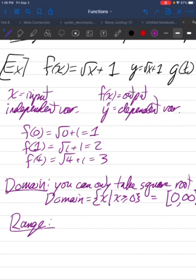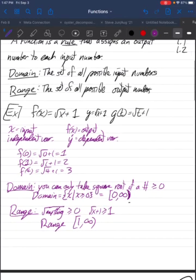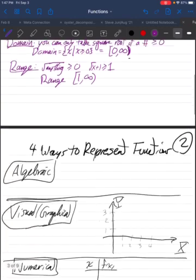Likewise, the range, you take the square root of something, it's always at least 0, 0 or positive. And then, so if you take the square root of something and add 1, it's always greater than or equal to 1. So that means that the range in interval notation goes from 1 to infinity. And again, 1 is included, infinity is not. All right, so that's one example of a function.